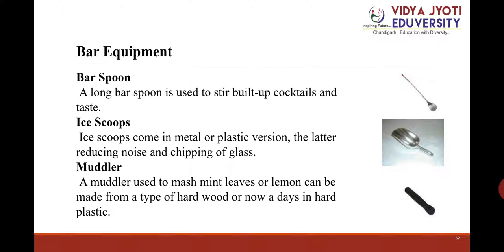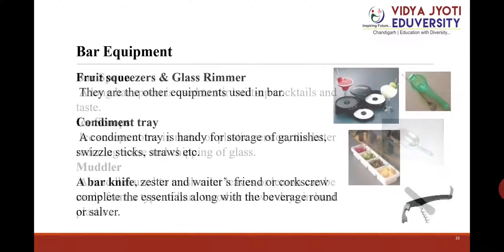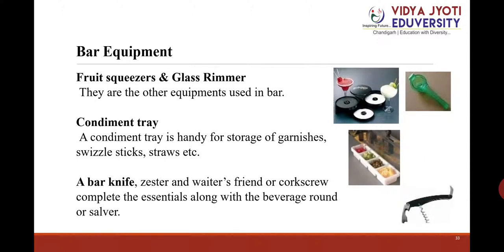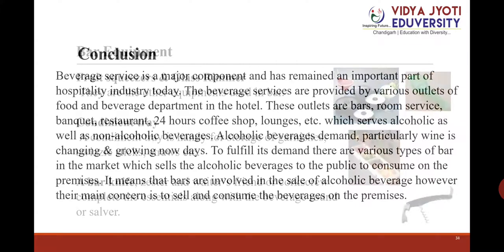Ice scoops come in metal or plastic versions, the latter reducing noise and chipping of glass. A muddler is used to mash mint leaves or lemon and can be made from hardwood or hard plastic. Other bar equipment includes fruit squeezers and glass rimmers, which are frequently used. A condiment tray is handy for storage of garnishes, swizzle sticks, straws, and other materials. A bar knife, zester, and waiter's friend or corkscrew complete the essentials, along with a beverage tray or salver.